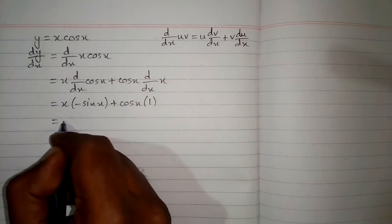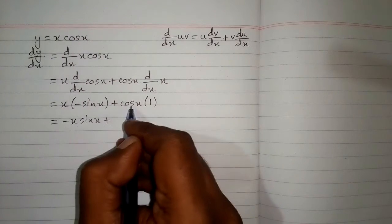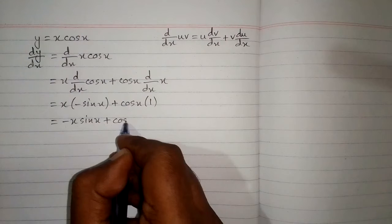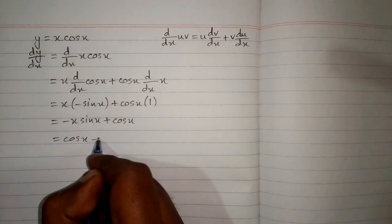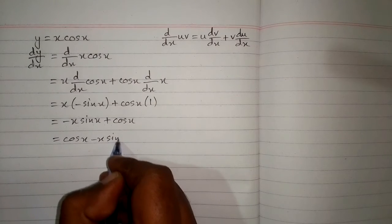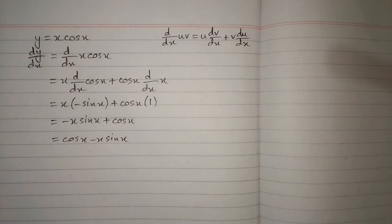Now x multiplied by minus sin x is minus x times sin x plus cos x multiplied by 1 is cos x. And this can be written as cos x minus x times sin x. So the derivative of x times cos x is cos x minus x times sin x.